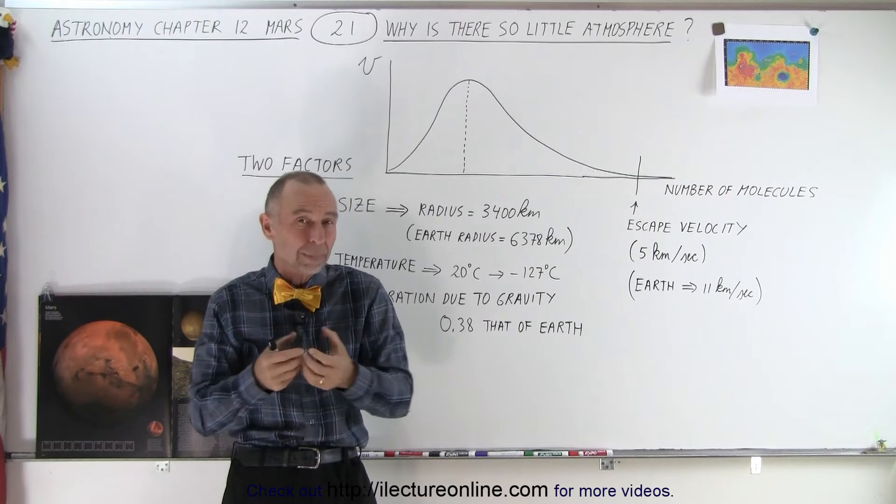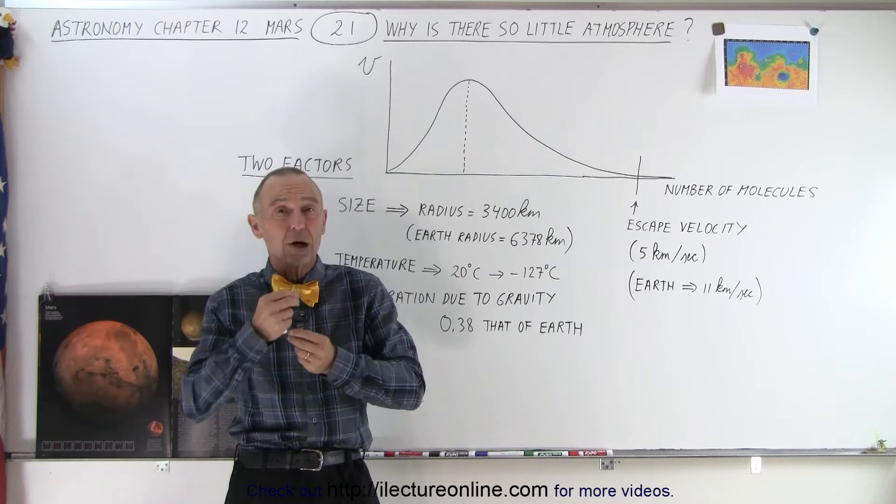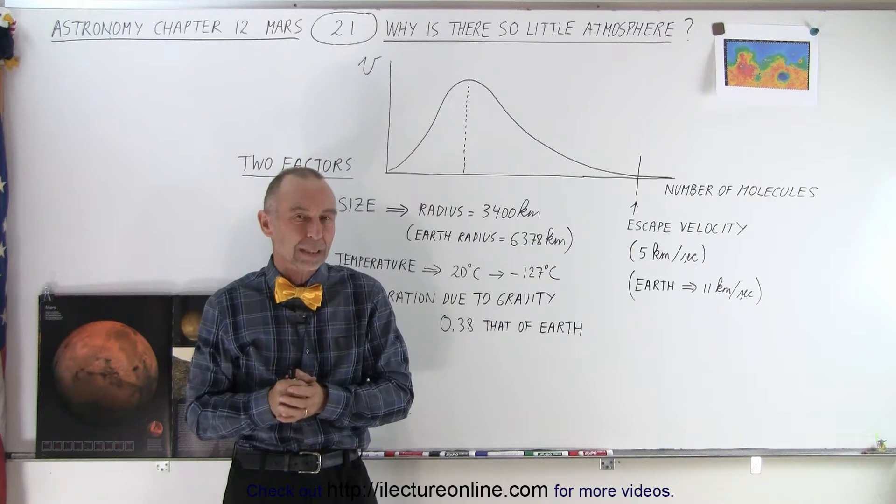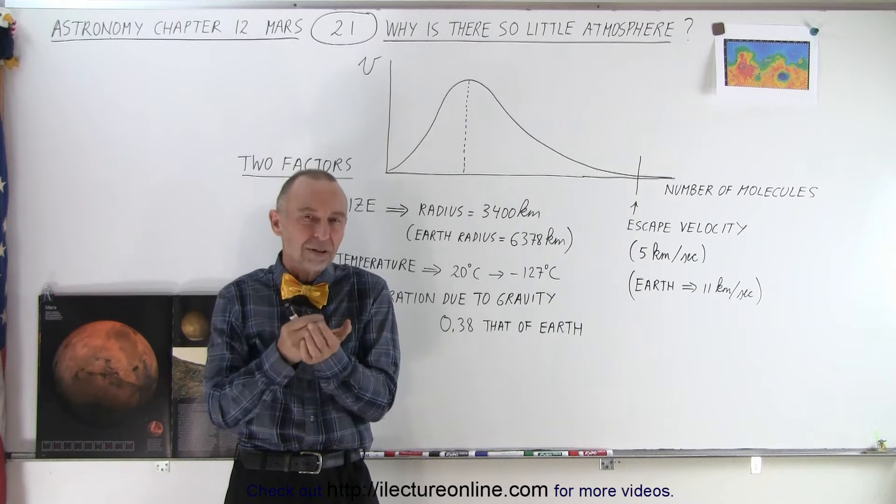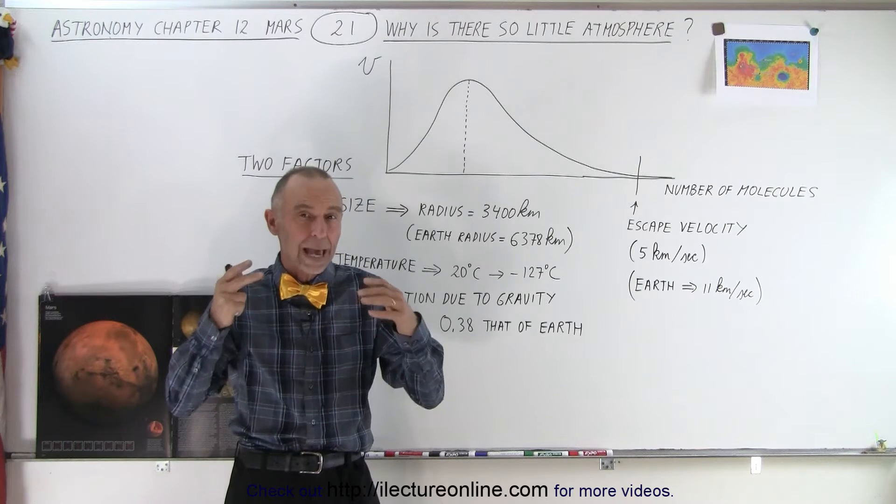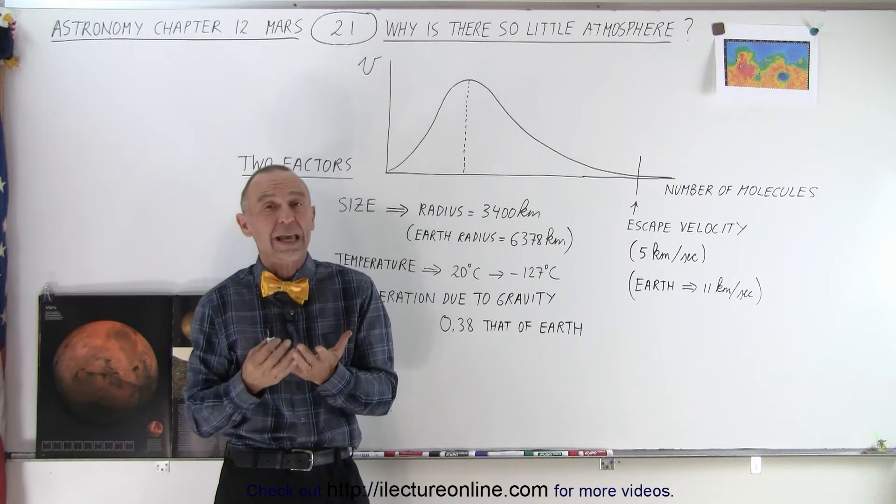And two, that it's not too hot, because the hotter it is, the faster the molecules move and the more likely they are to escape away from the gravitational force of the planet. If the velocity of the molecules exceed the escape velocity of the planet, the atmosphere will leak out. And presumably for Mars that was the case.